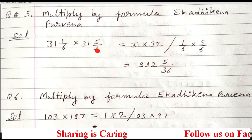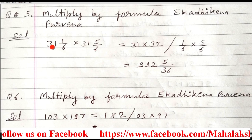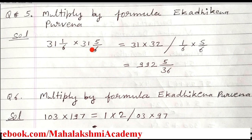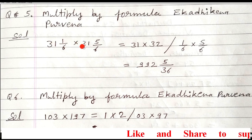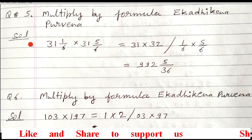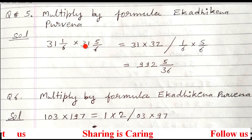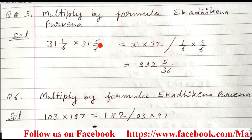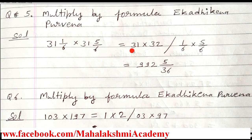When you get fractions to multiply by Ek Adhikena Purvena, the question will come in a format where the integers are the same — like here 31 and 31. The fractions may or may not be the same; that doesn't matter. Since 31 is same as 31, you do Ek Adhik on 31. Write 31 as it is, and Ek Adhik of 31 is 32. Write down 31 here, then 32, then put a long slash and write the fractions 1 upon 6 and 5 upon 6 as they are.